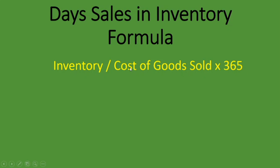Whether to use inventory or average inventory depends on what your lecturer, textbook, or study guide specifies. If they say use average inventory, use that; if they say inventory or ending inventory, use the balance at the end of this period. Also note that while we use 365 days, your question may specify 360 days — use whatever the question indicates, and default to 365 if not specified.